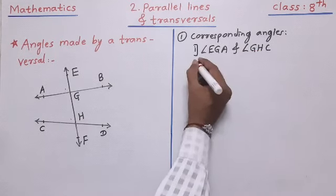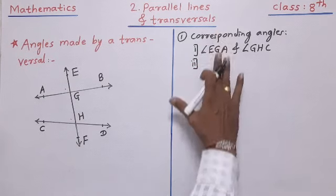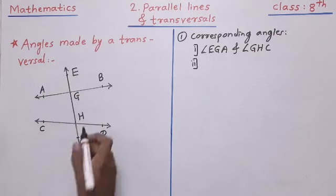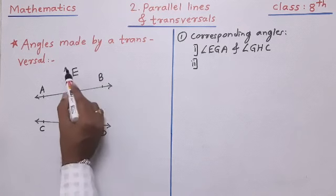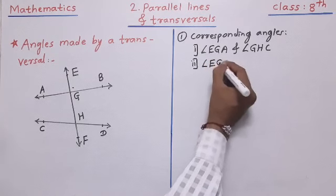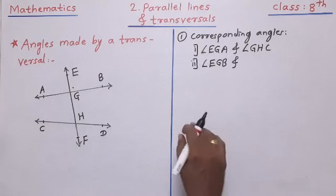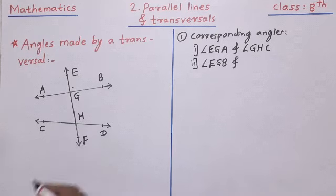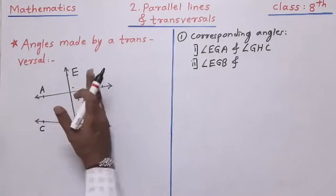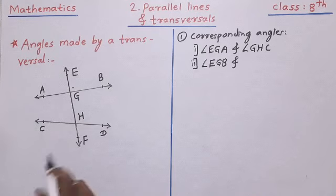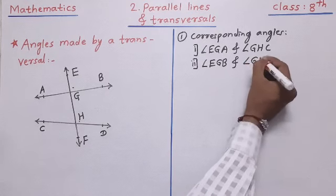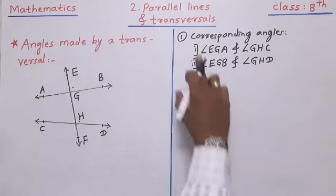There are a total of four pairs of corresponding angles. The second pair: if we take angle EGB, its corresponding angle will also be above, but on the same side of the transversal. So this angle can be read as angle GHD. This is the second pair of corresponding angles.